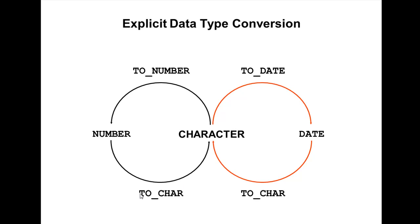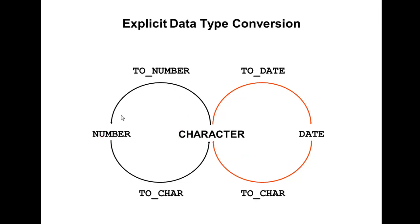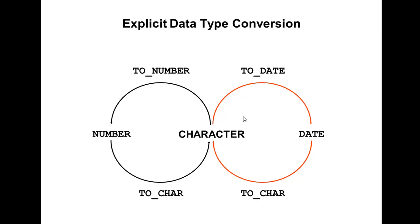TO_CHAR converts a number or date to a VARCHAR2 character string. TO_NUMBER converts a character string to a number data type. TO_DATE converts a character string to a date data type.